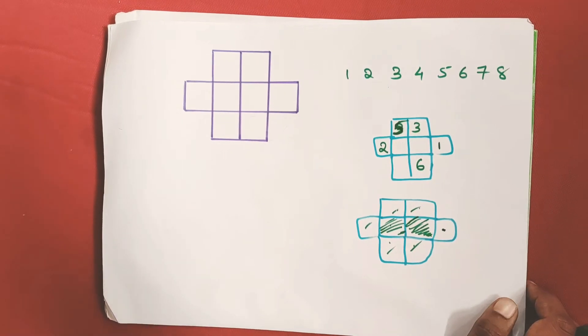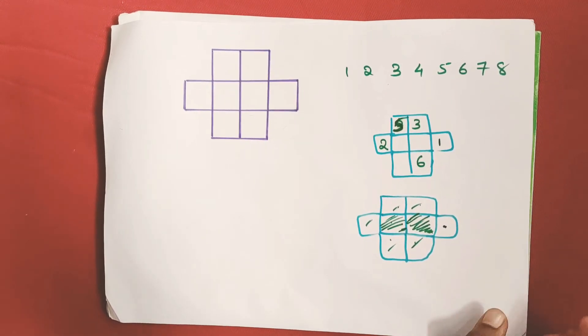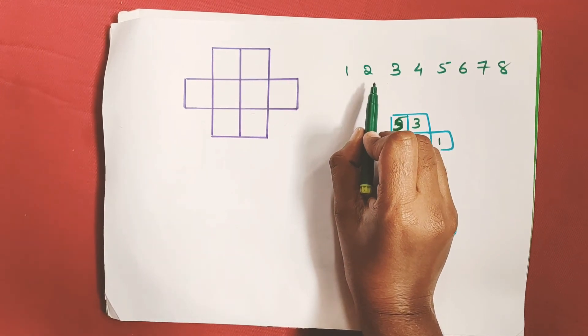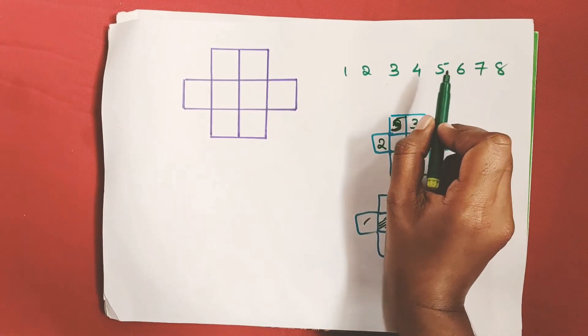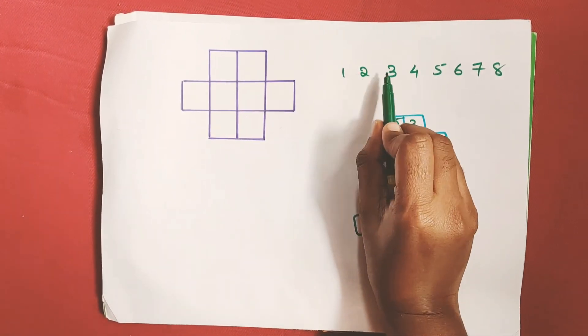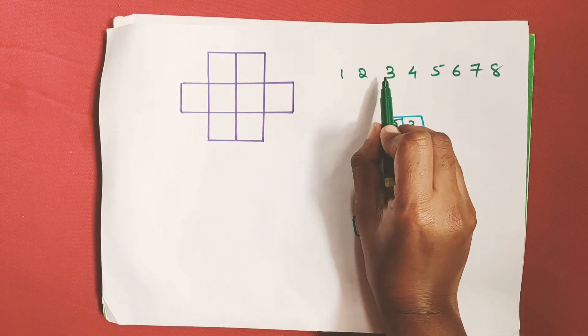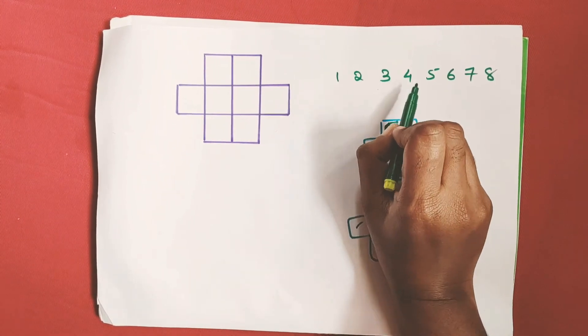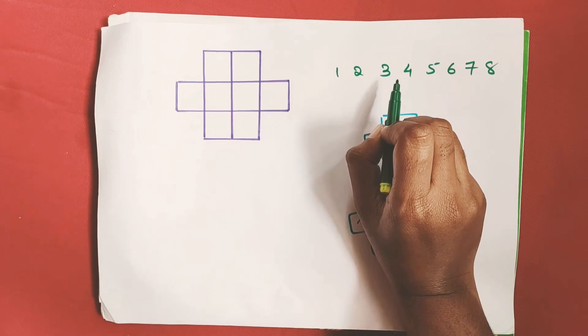Observe that numbers from 2 to 7 have two neighboring numbers - for 2 it's 1 and 3, for 3 it's 2 and 4, and so on.